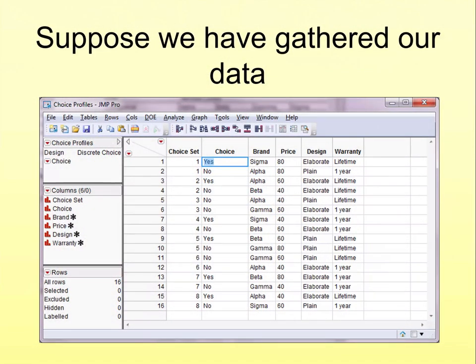Suppose we've designed our study, gathered our data, and uploaded it as a data file into JUMP. Now here's an example of a data matrix where one person was given 8 different choice sets, where each option took on a different brand name, price, warranty, and design.